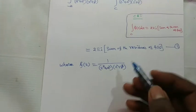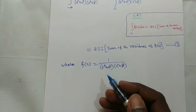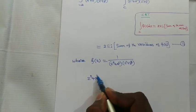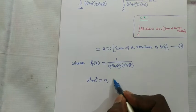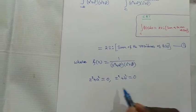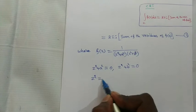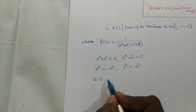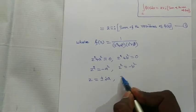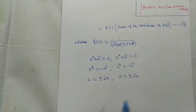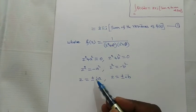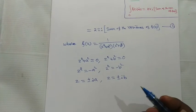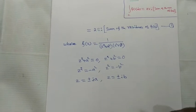To find the residues, first find the poles by equating the denominator to zero: z² + a² = 0 and z² + b² = 0. This gives z² = −a² and z² = −b², so z = ±ia and z = ±ib. There are four poles: ±ia and ±ib. Now we verify which poles lie inside the contour C and which lie outside.